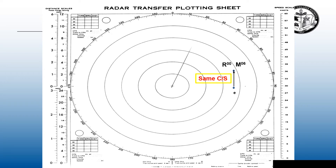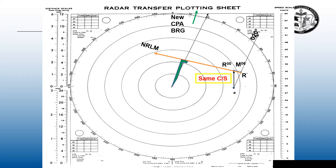We want to alter course to 020 degrees. We're going to parallel or transfer that to E, get our compass, stab E, and swing R00 to starboard — now we have an R prime. Before, we did not have relative motion. Since we changed course on the relative motion radar, we changed relative motion. Now we have relative motion from R prime to M06, and we can get a new CPA and bearing of CPA. If we made that 020 degree course change, we would miss them by a little over four miles, with a new CPA bearing of about 013 degrees.